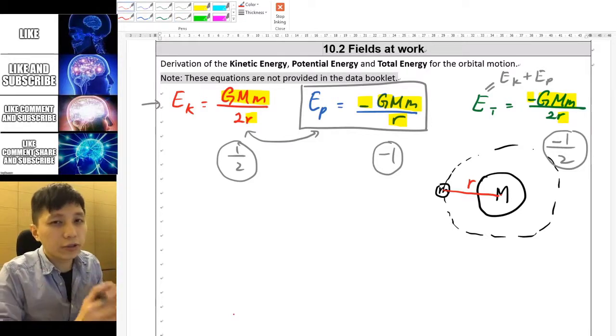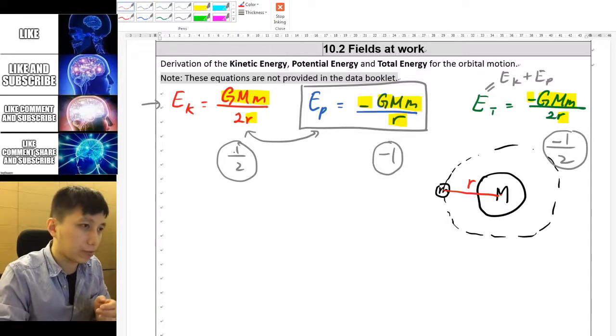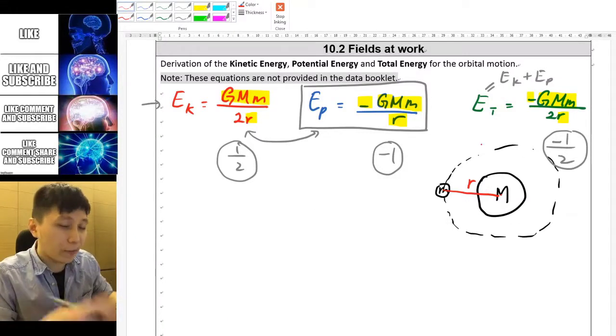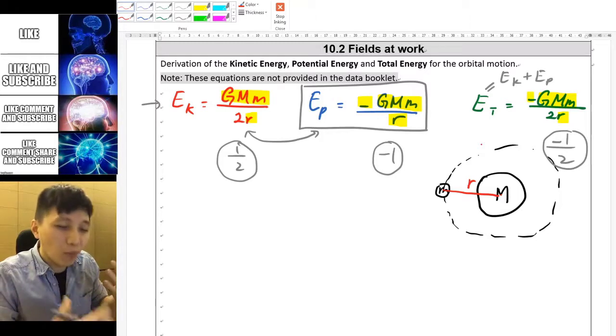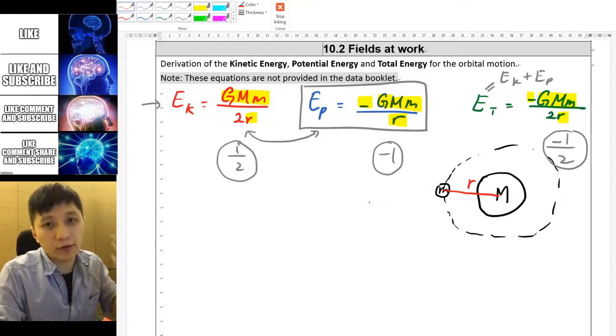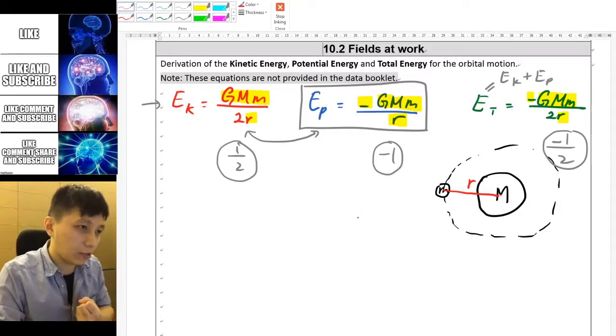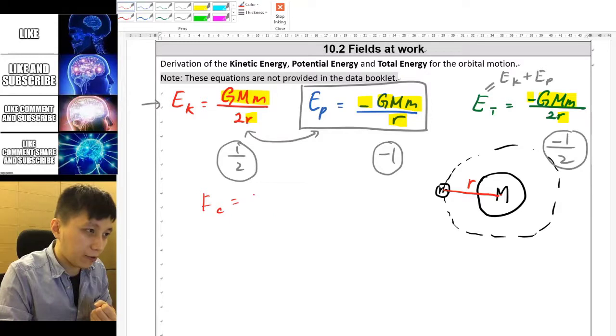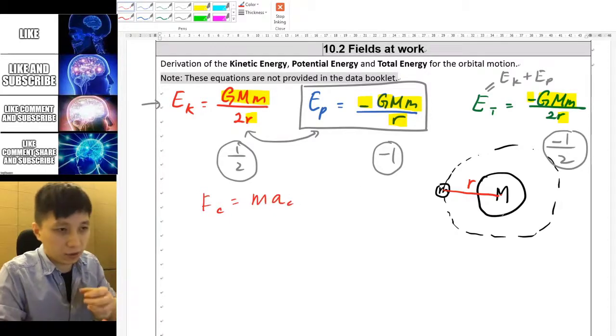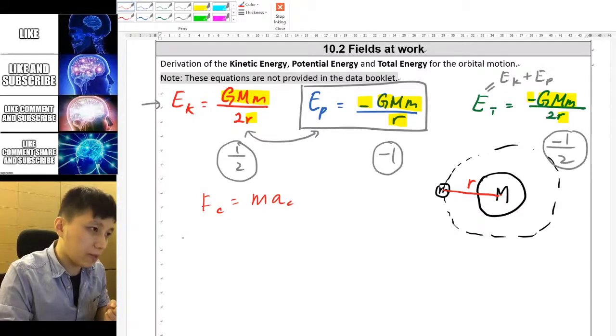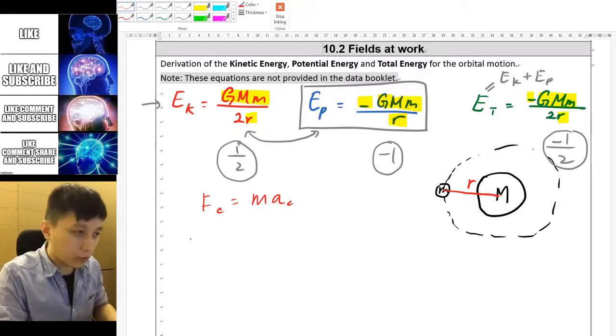Alright so the only question now would be how do we derive the kinetic energy expression. Well since we are talking about orbital motion you need to think about more fundamental physics equations and that is what we learned about circular motion and gravitational force. So once again let's start with F equals MA for the circular motion of this orbital motion. The force that we have could be the gravitational force of course.